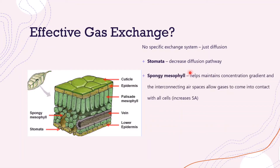Then we have our spongy mesophyll. It helps to maintain concentration gradients of gases, so gases can diffuse down these gradients. The interconnecting air spaces allow gases to come into contact with all the cells. As these air spaces branch through the spongy mesophyll, gases are able to reach all of the cells, and they also increase the surface area, so more surface area is available for gases to diffuse into the cell.